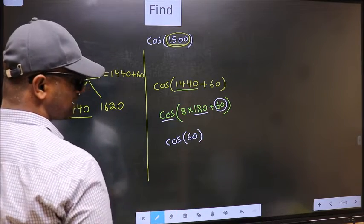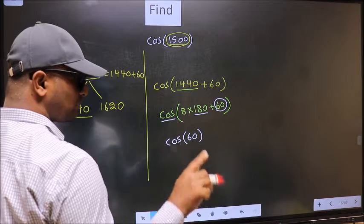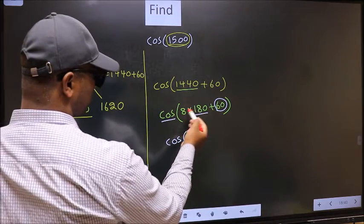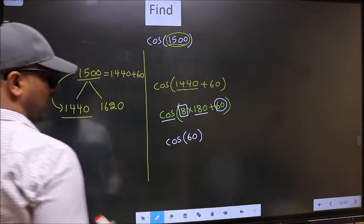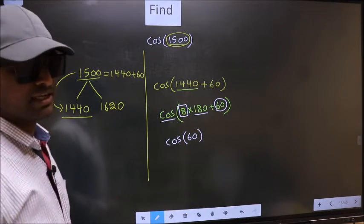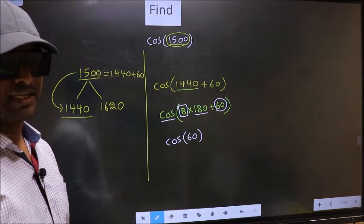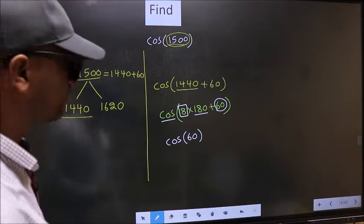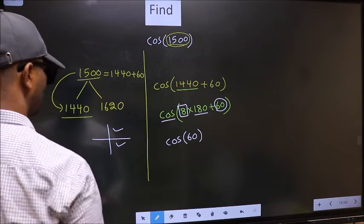Now the question is, will we get plus or minus? To answer that, we should look at the number before 180, that is 8. 8 is even. And all the even multiples of 180 lie either in the first or in the fourth quadrant.